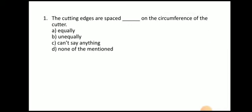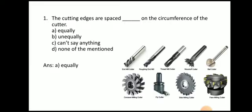The first question: the cutting edges are spaced on the circumference of the cutter — equally, unequally, can't say, or none of the mention. The answer is equally. Here you can see different types of milling cutter: end milling cutter, roughing end mill, thread mill, woodruff cutter, ball cutter, concave milling cutter, fly cutter, side milling cutter, face milling cutter. The teeth are equally spaced on the circumference of the cutter.